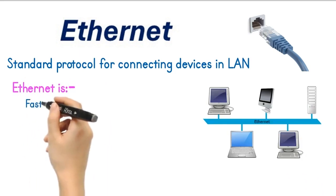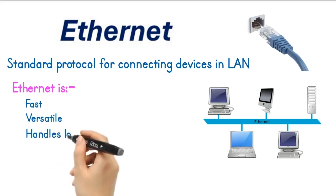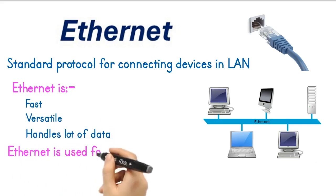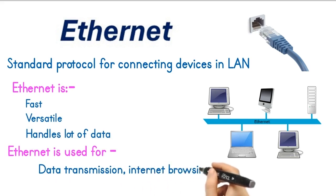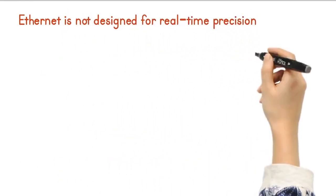Ethernet is fast, versatile, and handles a lot of data. It's used for tasks like data transmission, internet browsing, file sharing, and streaming. But Ethernet is not designed for real-time precision. That's where Profinet comes in.